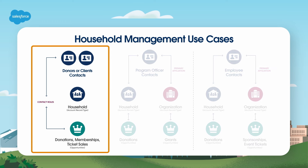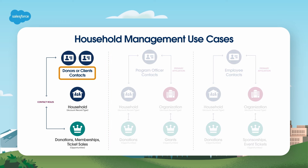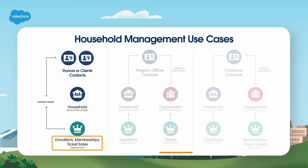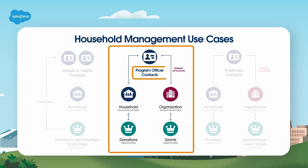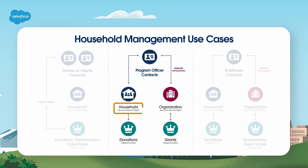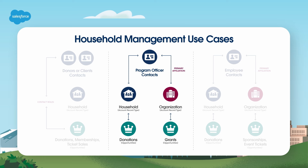This first example is similar to the previous one — you have donors or clients associated with a household who purchase a membership or donate to your organization. In the second example, we have a program officer who is a contact with his own household, but is also affiliated with his employer, a foundation. When you create an account for an organization such as those who provide grant funding, connect any contacts using affiliations. The primary affiliation is usually where someone works.